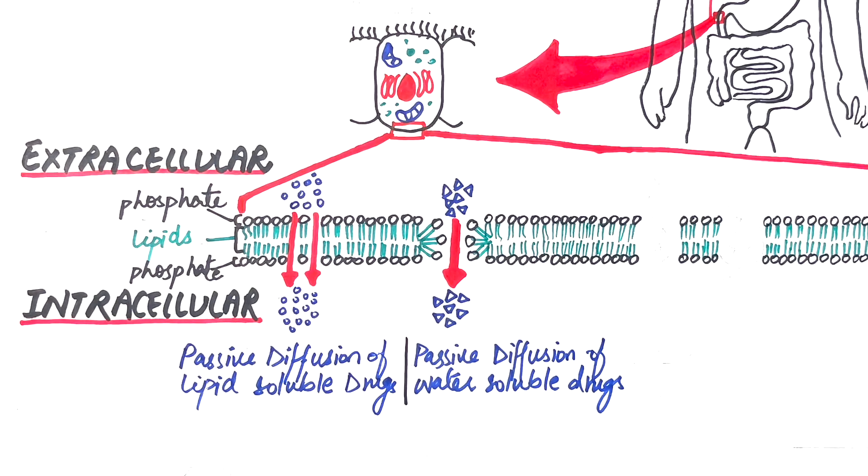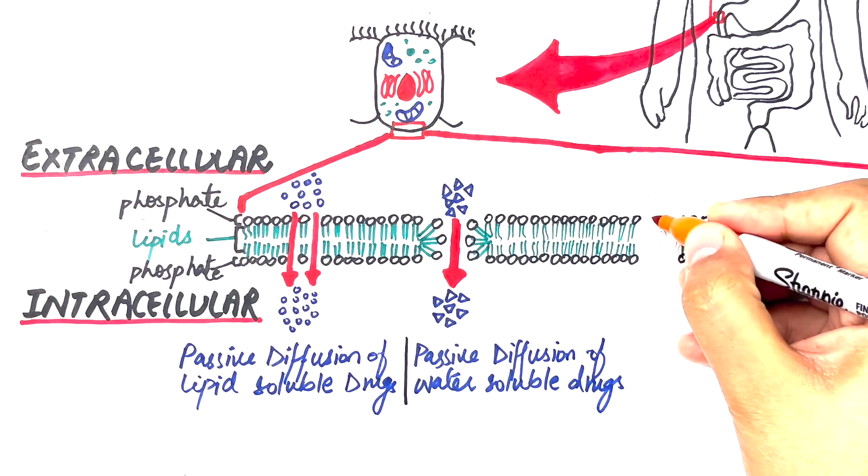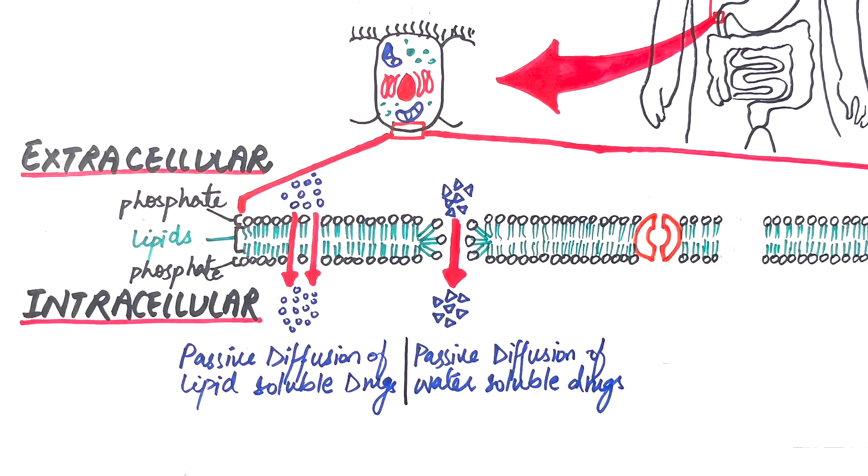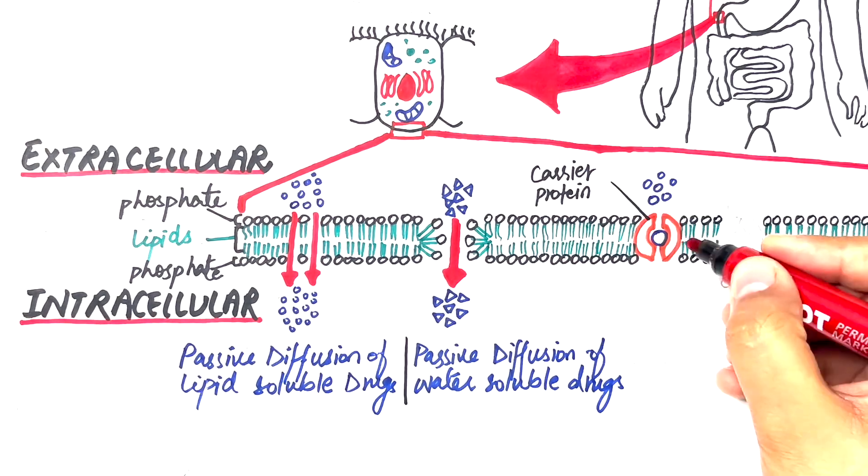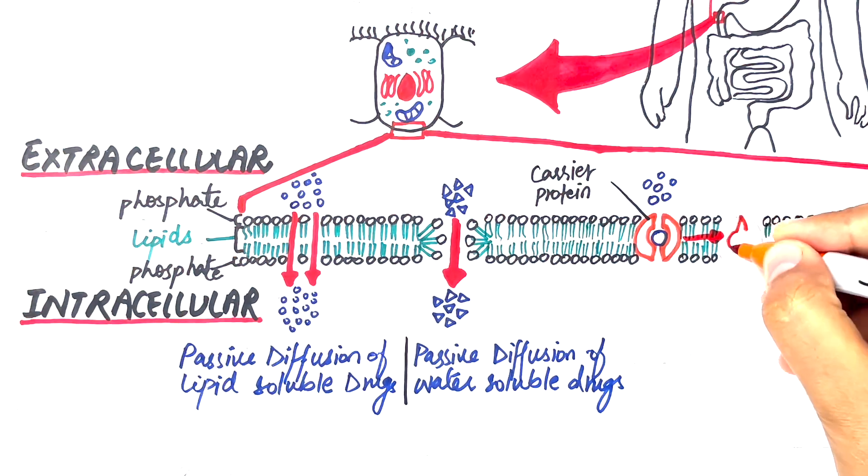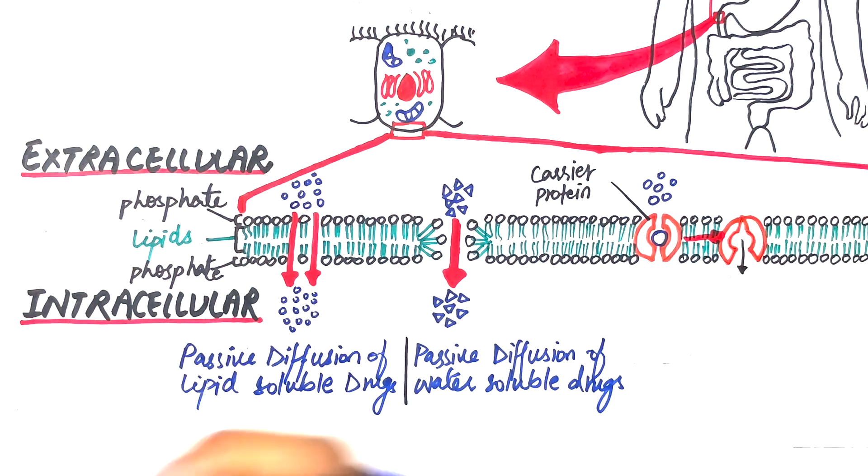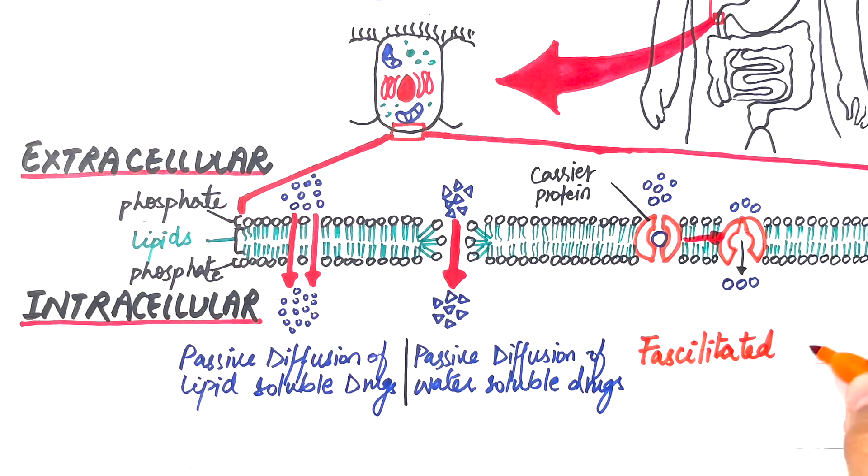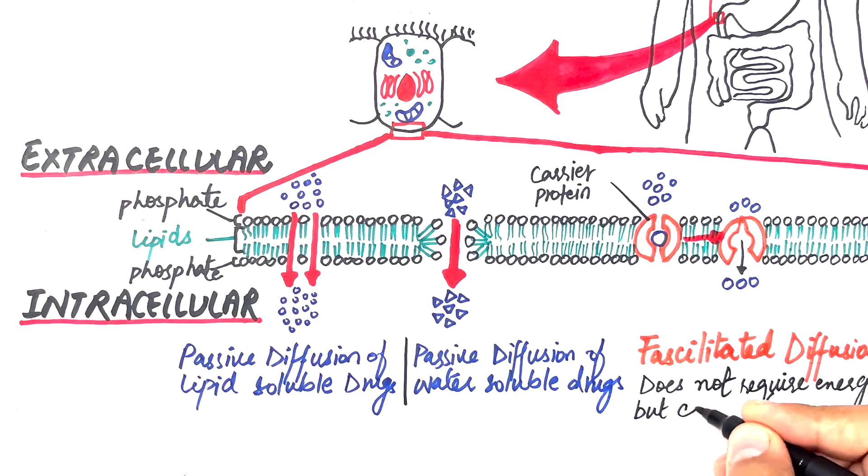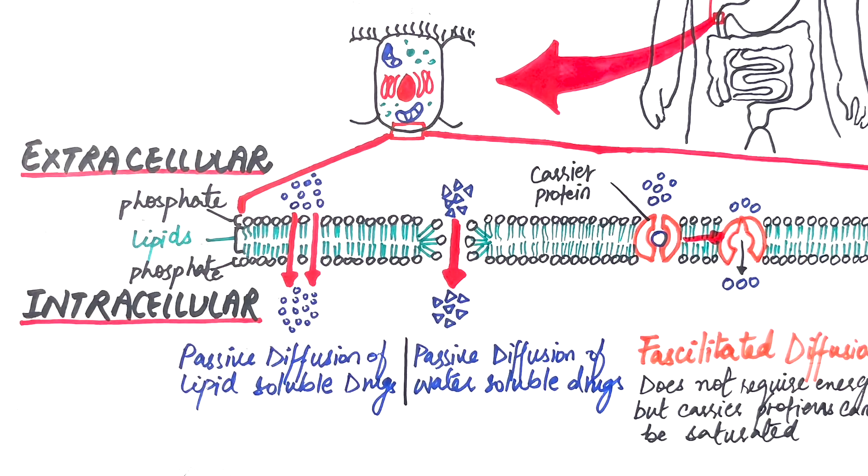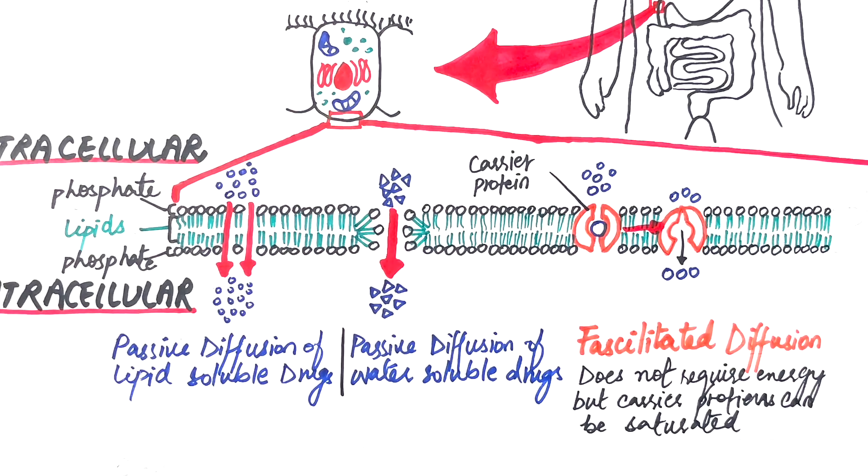In facilitated diffusion, also known as facilitated passive diffusion, drugs enter the body cells through transmembrane carrier proteins. Once a drug molecule attaches to the carrier protein, the carrier protein then undergoes a conformational change and transports the drug into the cell. Just like passive diffusion, facilitated diffusion does not require energy. However, the carrier protein can be saturated and then it may be inhibited by compounds that compete for the carrier protein.